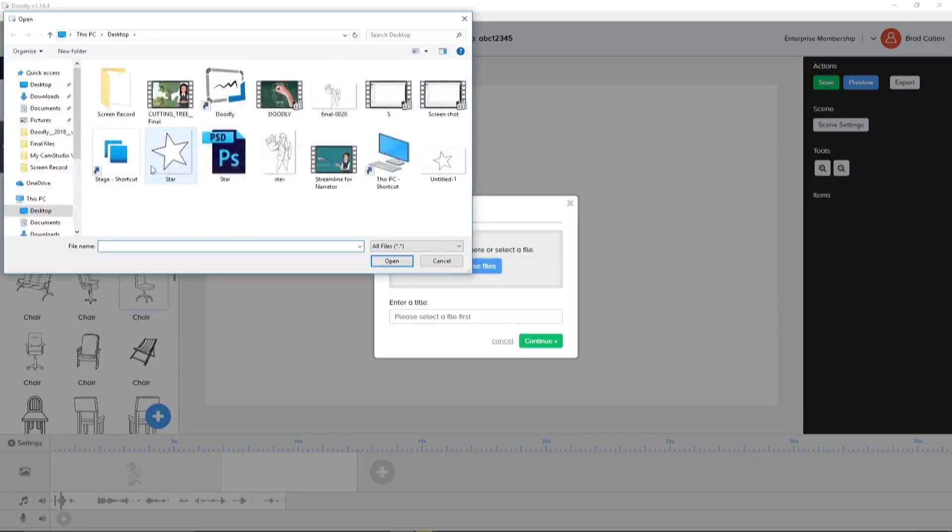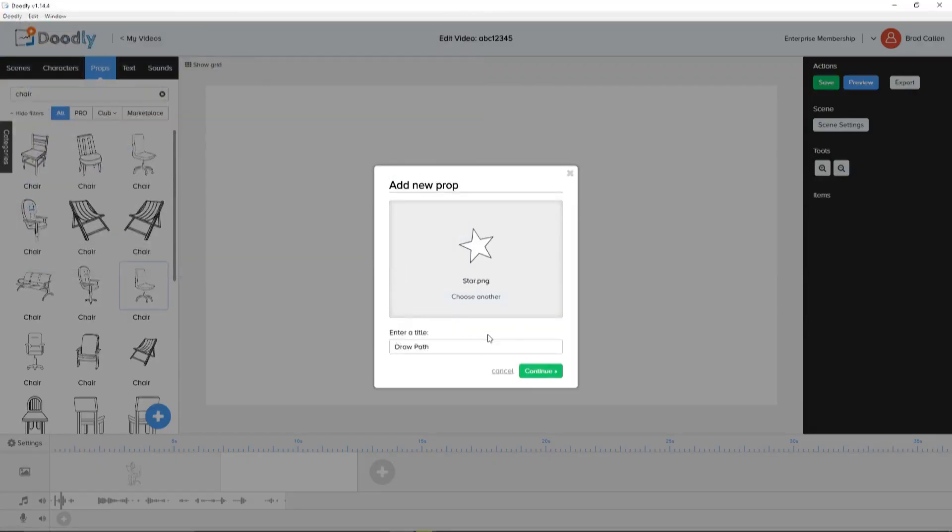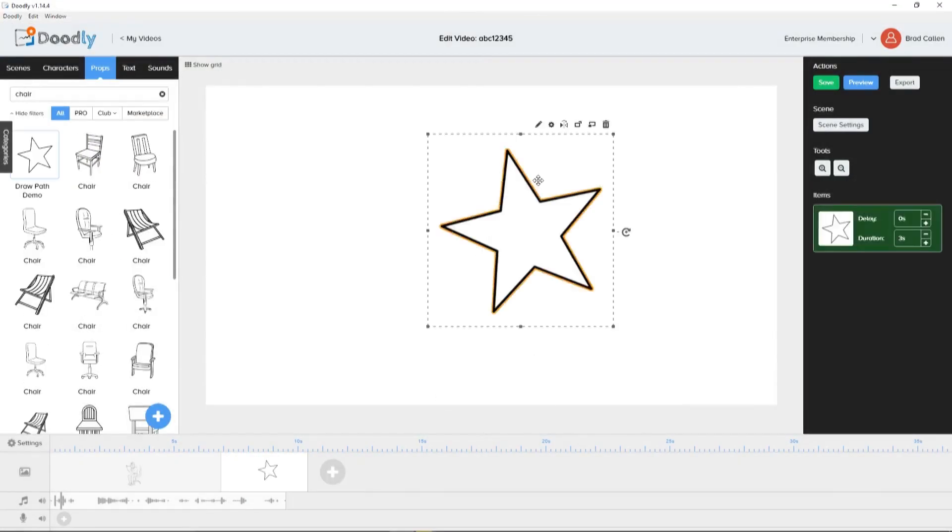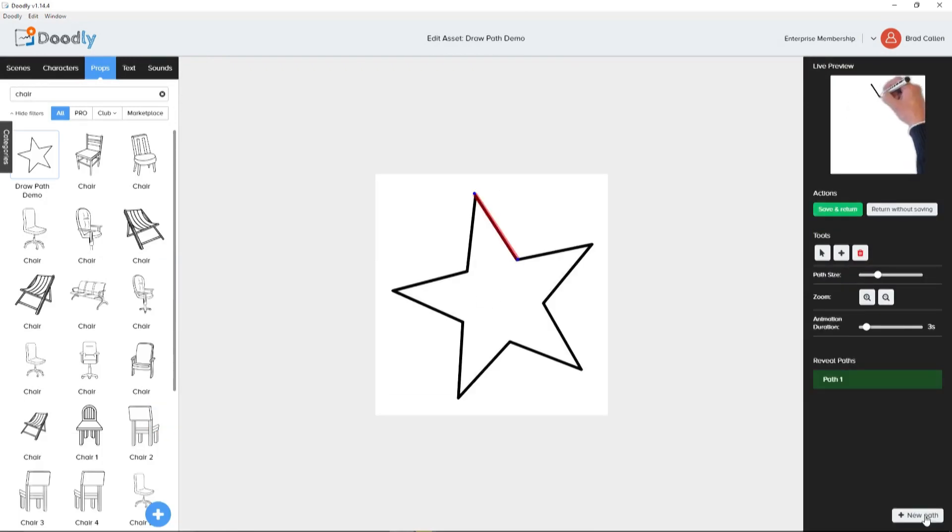Oh, and when you upload your own image, you can create cool draw paths like this. Using our enhanced doodle draw technology, you can create realistic drawing movements on any image, regardless if you uploaded it, or you use one of the ones we offer.